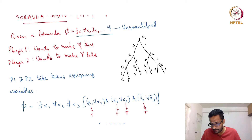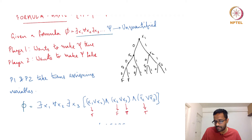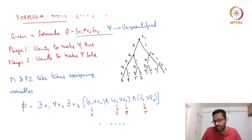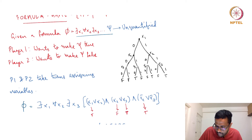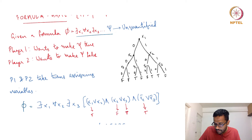If x1 is false but x2 is true, it depends on x3. If x3 is 0 or false, the formula is set to true; otherwise it is false. If x1 is true, then x3 is set to just the opposite of x2. So for the subtree where x1 is true, two of the four leaf outcomes are wins for player one and two are losses. The winning outcomes correspond to x3 being the opposite of x2.